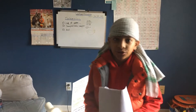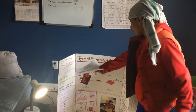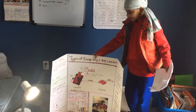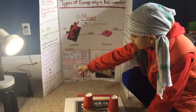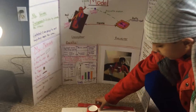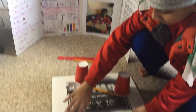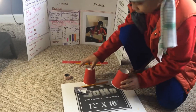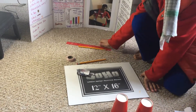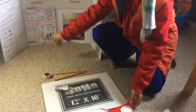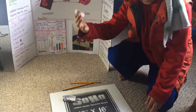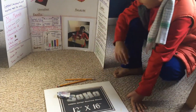Welcome back guys, it's me JD the spy kid. Today we're gonna study about types of energy using a ball launcher. The materials are cardboard, two plastic cups, one wooden or plastic ruler, tape, and pencils.